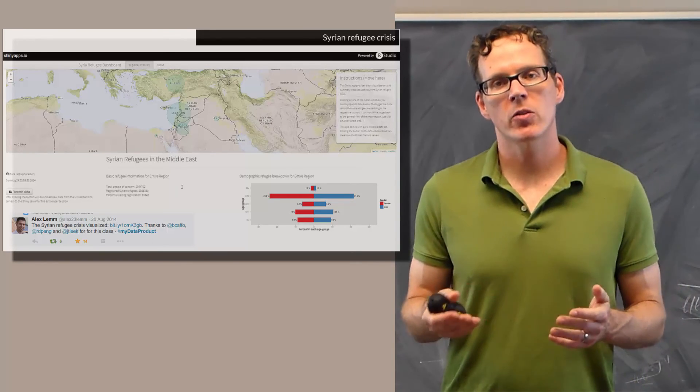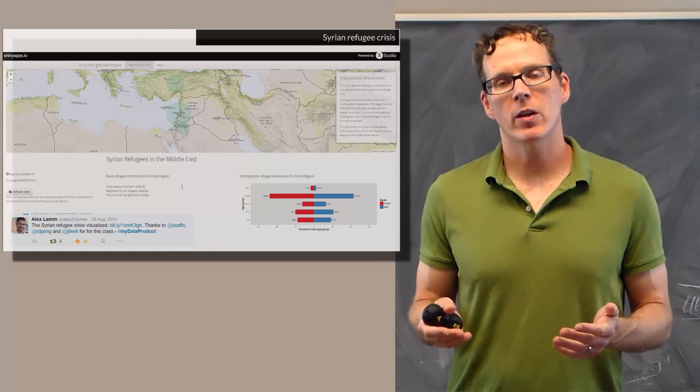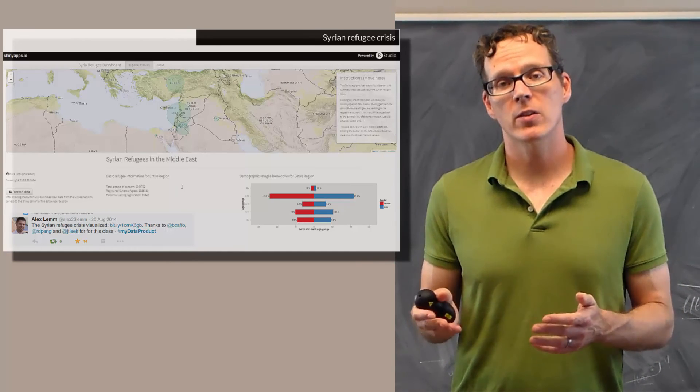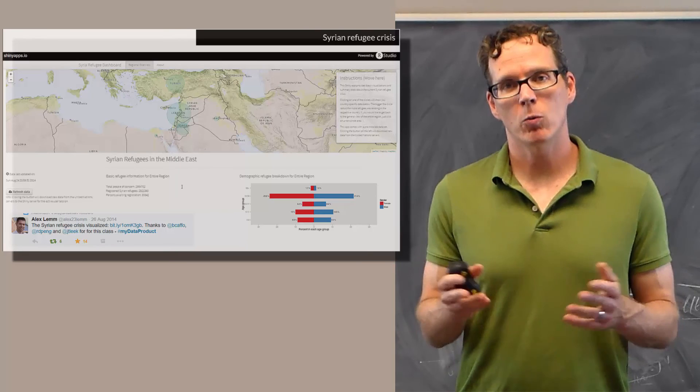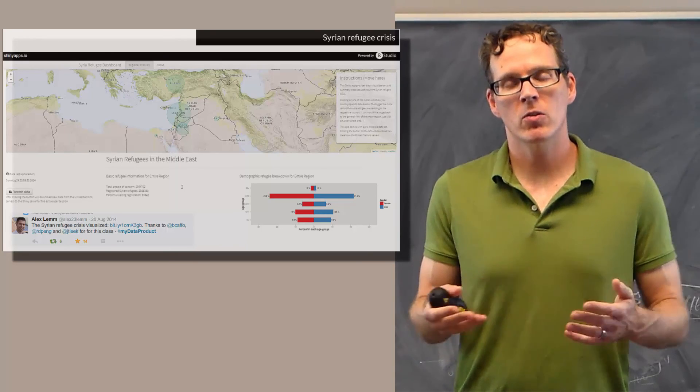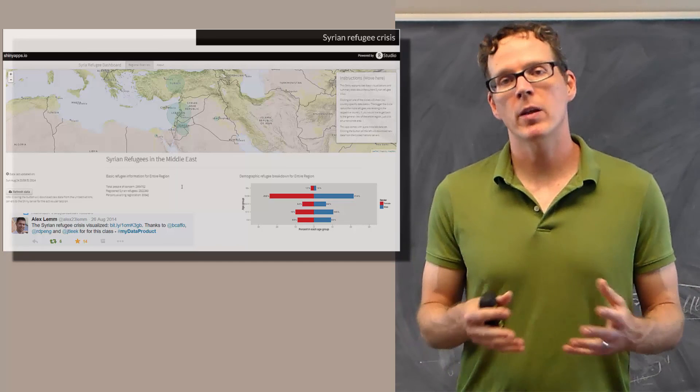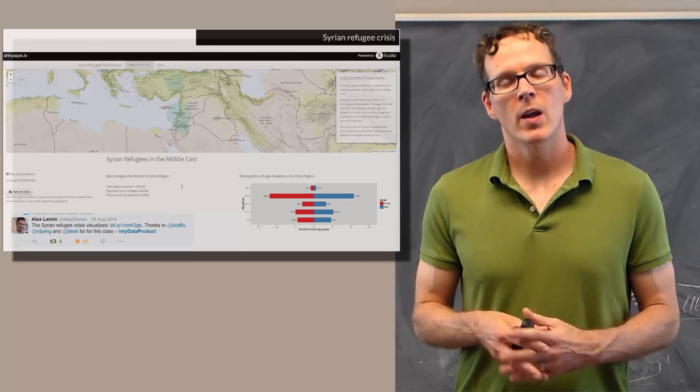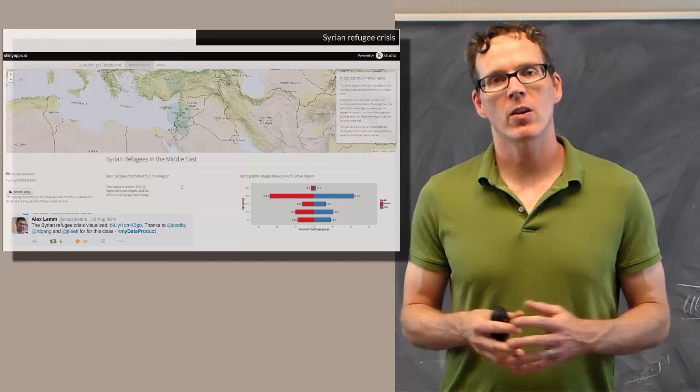I hope in this lecture you got a little bit of a sense of the kinds of things that could be output from a data science experiment. We like to call them data products that could result. And maybe some insights, at least some of the insights that we have about what make for good data products. Thanks again and we'll see you in the rest of the class.